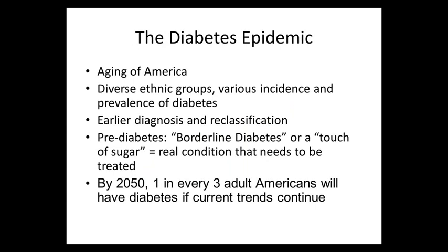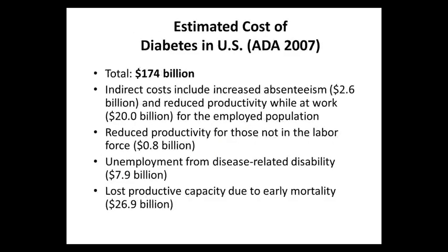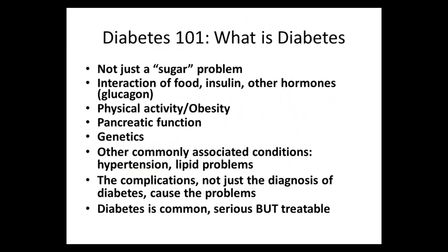We know we need earlier diagnosis and must identify people at risk. The cost of diabetes is 174 billion dollars, including hospitalization and decreased workplace productivity. If we follow really good interventions, we can improve all of these numbers. Diabetes is not just a sugar problem — it's the interaction of food, insulin, other hormones, physical activity, and genes.